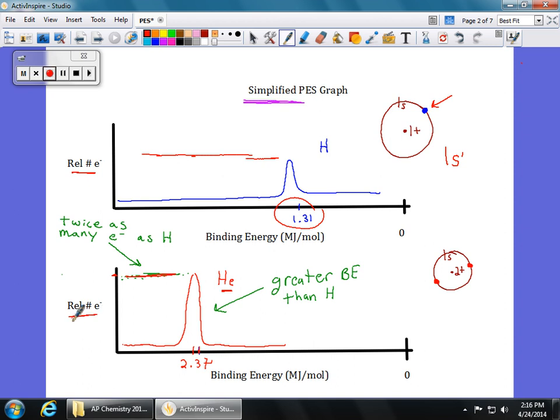So what you're going to notice that it's about twice as many electrons, twice as many electrons as hydrogen, because the peak is two times higher. And it has more energy, we're talking about 2.37 compared to 1.31 megajoules. So why is that?